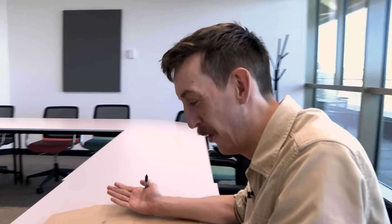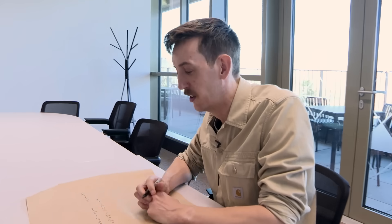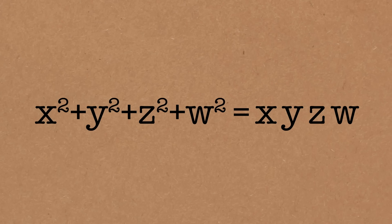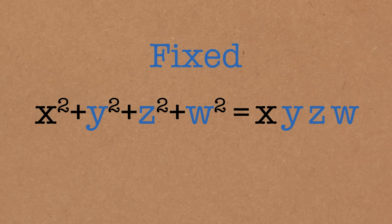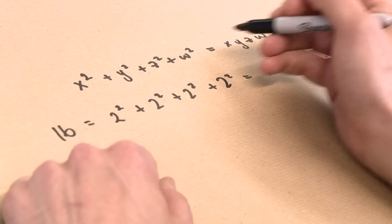Well, maybe there are other solutions. And one way to find another solution would be to look at the equation and try to guess another one. But there's a more clever way to do it. The clever way is to notice that this equation has a very special property: even though it's degree 4 — four things multiplied together — if I view y, z and w as constants, then it becomes degree 2 in x and therefore much easier to deal with.